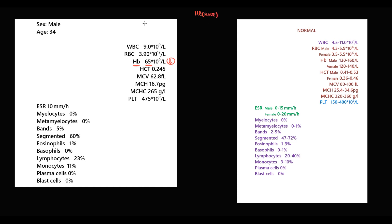To determine severity we need two threshold values: 110 and 80. Normal hemoglobin for males is 130–160. From 110 to the lower limit of normal is mild anemia; from 80 to 110 is moderate anemia; and lower than 80 is severe anemia. In this case hemoglobin is 65, so it is severe anemia. The type of anemia according to the size of red blood cells is determined by MCV.